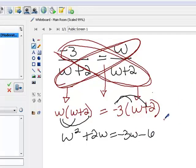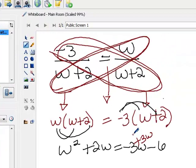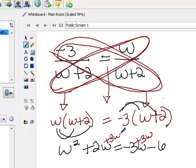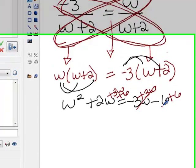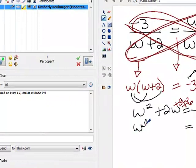Now, we need 0 on one side, and then we can factor and solve. So I'm going to go ahead and add 3w to both sides, and add 6. That makes these go away, and the right hand side has a 0. And the other side turns into w squared plus 5w plus 6.